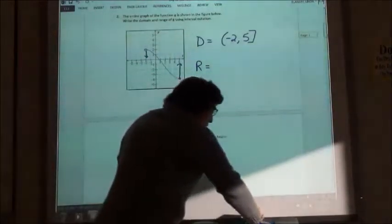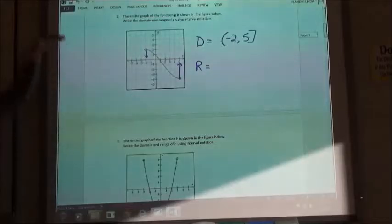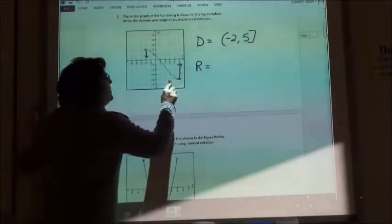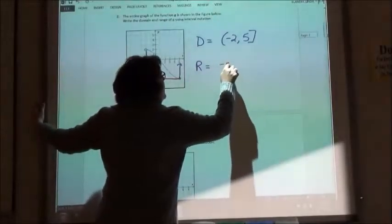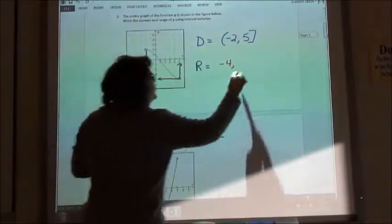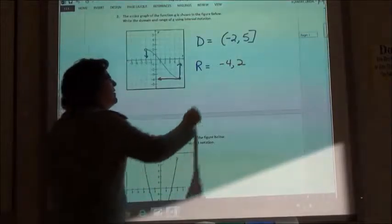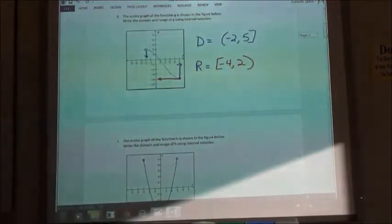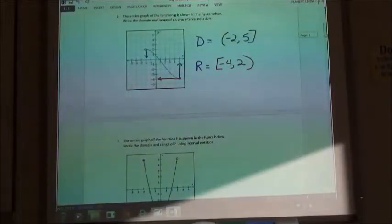My range was starting on the bottom going to the top. So my bottom point is at negative 4. My top point is at 2. The negative 4 has bracket and the 2 parenthesis.